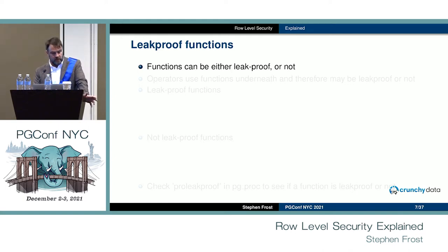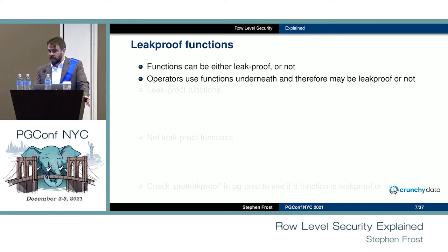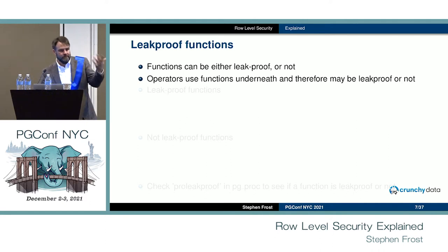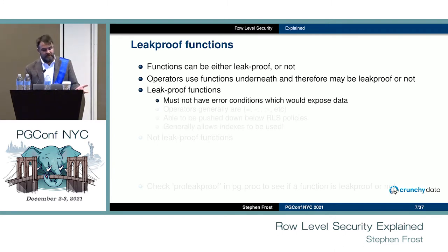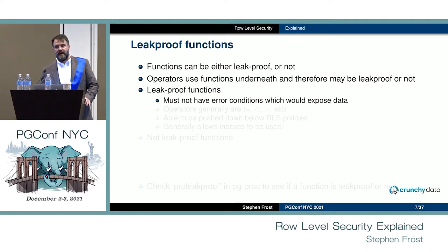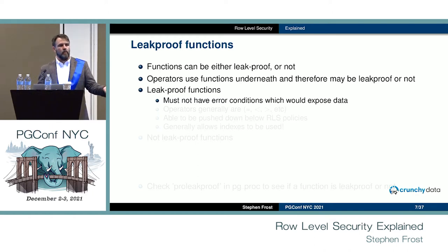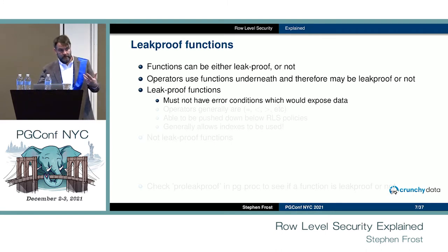Functions in Postgres can either be leak proof or not. Operators use functions underneath, so if the operator uses a leak proof function the operator is essentially leak proof too. Leak proof functions must not have any error conditions that expose data — I can use this function against a column of a table and nothing in that table will cause that function to spit out information about what is contained in that table.